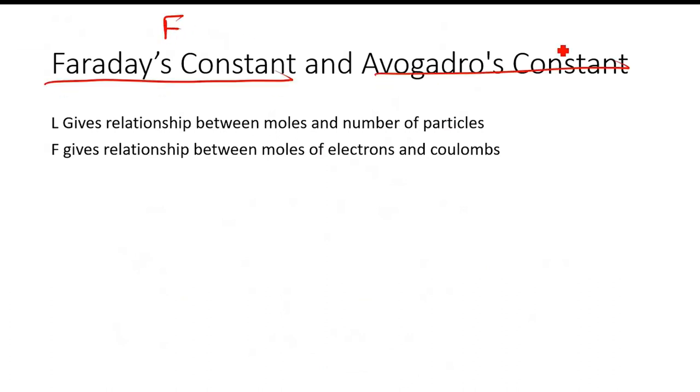Faraday's constant is called F and Avogadro's constant is called L. Avogadro's constant gives a relationship between moles and number of particles. Faraday's constant gives a relationship between moles of electrons and coulombs.